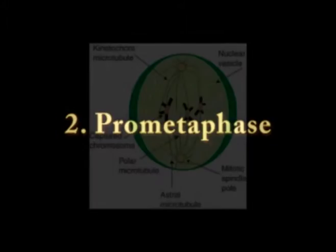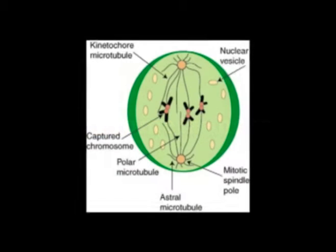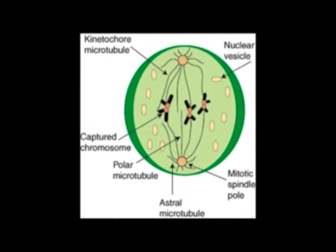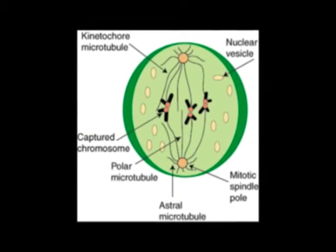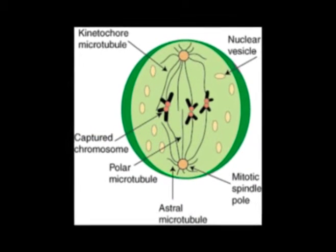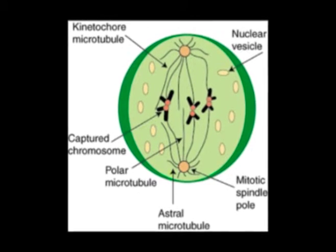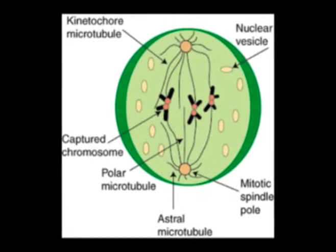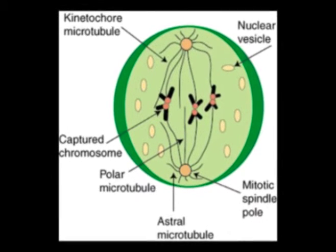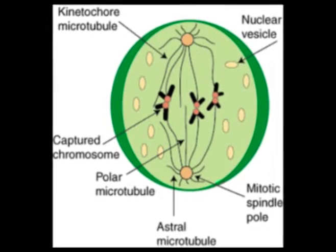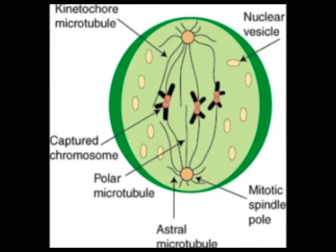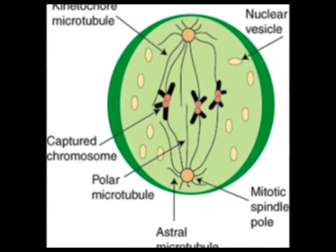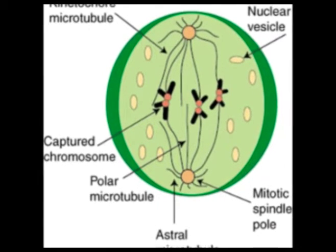Prometaphase: The chromosomes, led by their centromeres, migrate to the equatorial plane in the midline of the cell at right angles to the axis formed by the centrosomes.